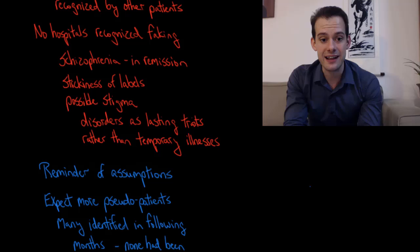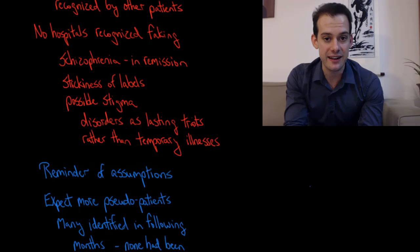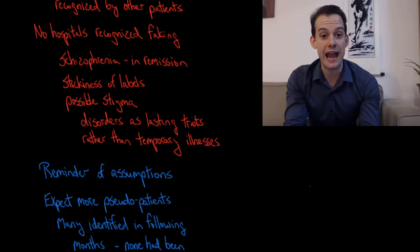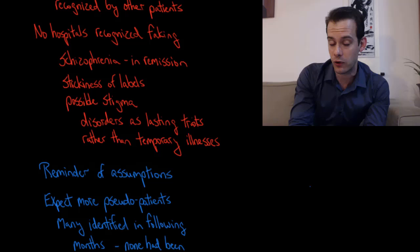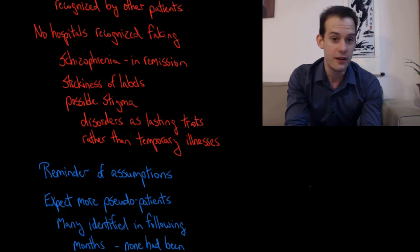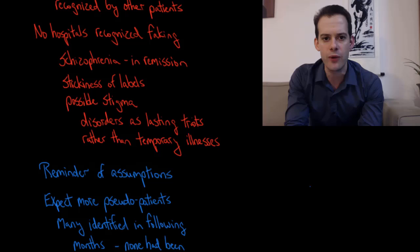We have this tendency to think of disorders as lasting traits rather than temporary illnesses. When somebody suffers from schizophrenia, we then have this tendency to think that this is a schizophrenic person who could relapse into schizophrenia at any moment, a schizophrenic in remission, rather than saying they have this illness and now they don't anymore. Like we would be more likely to do for physical illness: you have some infection and then you're healed and you no longer have any symptoms related to that infection, and we don't think of you as still having it.